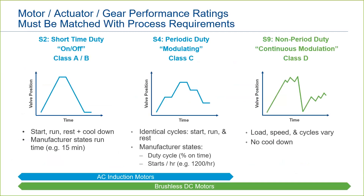Typically, we see S2 on-off and S4 modulating duty covered by AC induction motors. DC brushless motors can modulate continuously, but can also handle the less challenging S4 and S2 duties as well. The level of technology and robustness increases as we go from S2 to S4 to S9 service. S4 duty typically goes up to 1,200 starts per hour — that equates to a start every three seconds, which is pretty frequent and can cover a lot of applications. S9 is there really for control applications where continuous adjustment is the norm.